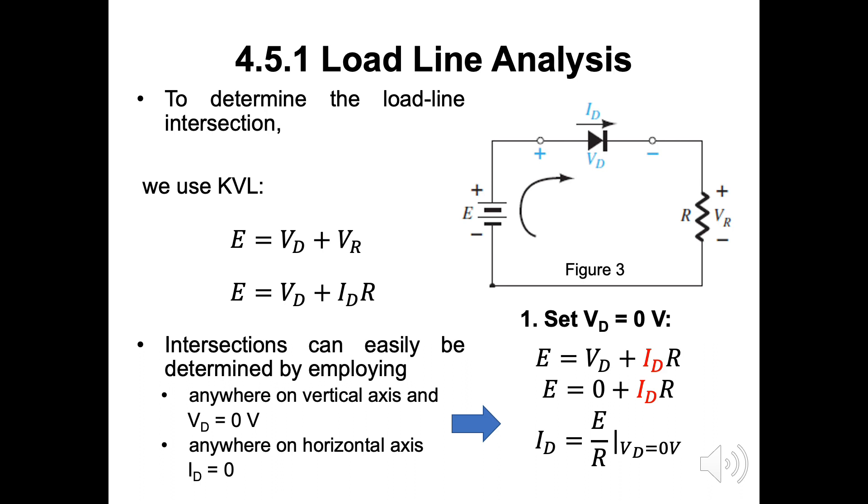Here, first, we will see the intersection at the both ID and VD axis. Intersections can easily be determined by employing anywhere on vertical axis VD is 0V and anywhere on horizontal axis ID is 0V. For vertical axis, set the VD to 0V. Apply the KVL for the circuit. We will have E is equal to VD plus ID R. Finally, we can obtain the point at vertical axis as ID equal to E by R.